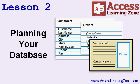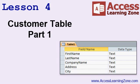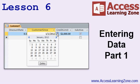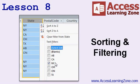In lesson three, we're going to learn about the different parts of the Microsoft Access interface. In lesson four, we're going to begin building our customer table to store customer information. In lesson five, we're continuing to work with our customer table and we'll learn about primary key fields. In lesson six, we'll begin to enter data into our customer table. In lesson seven, we'll learn more about data entry. In lesson eight, we'll learn how to sort and filter the data in our tables.